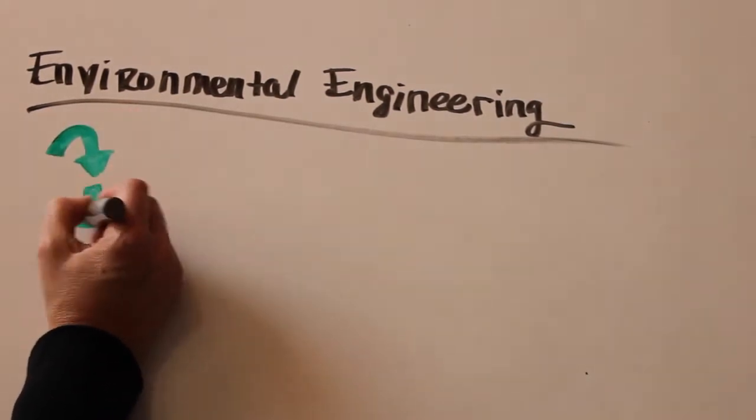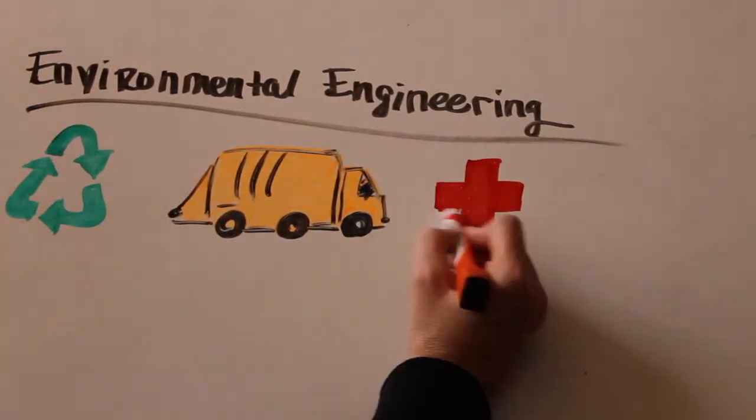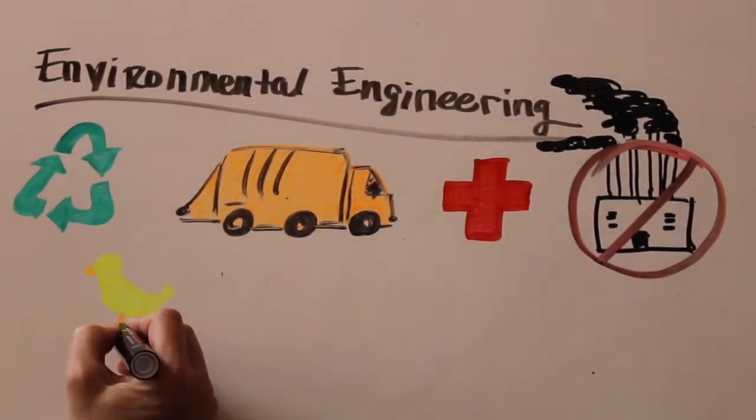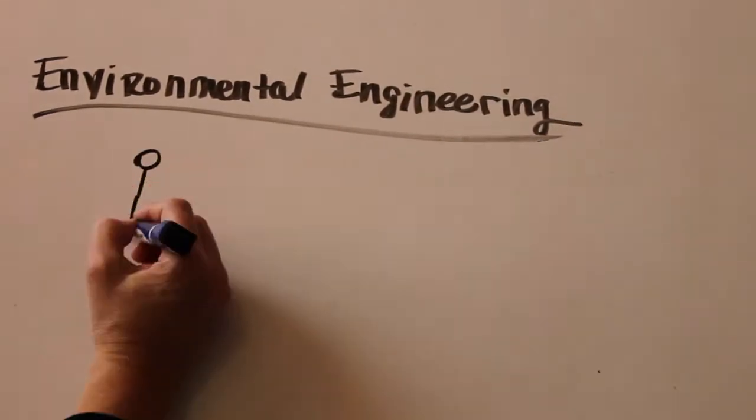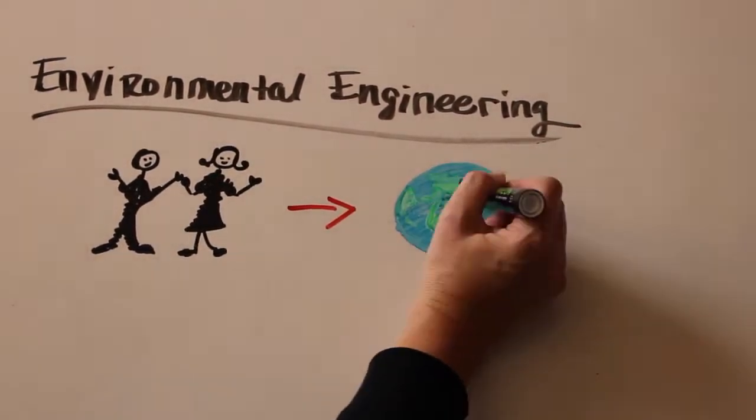Environmental engineers solve environmental problems to improve recycling, waste disposal, public health, and water and air pollution control. Environmental engineers try to prevent and clean up pollution, and they also take into account human impact when designing new projects.